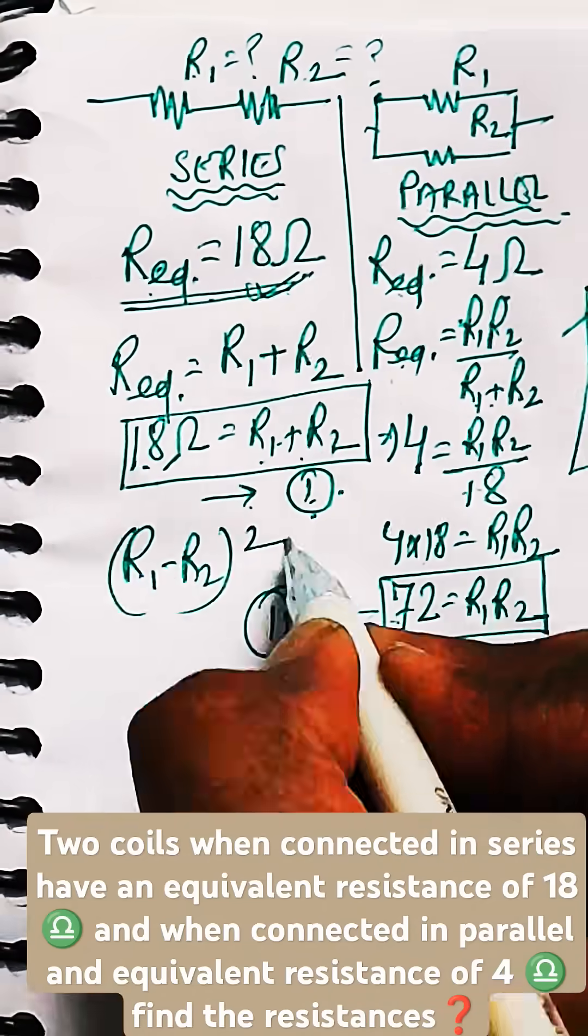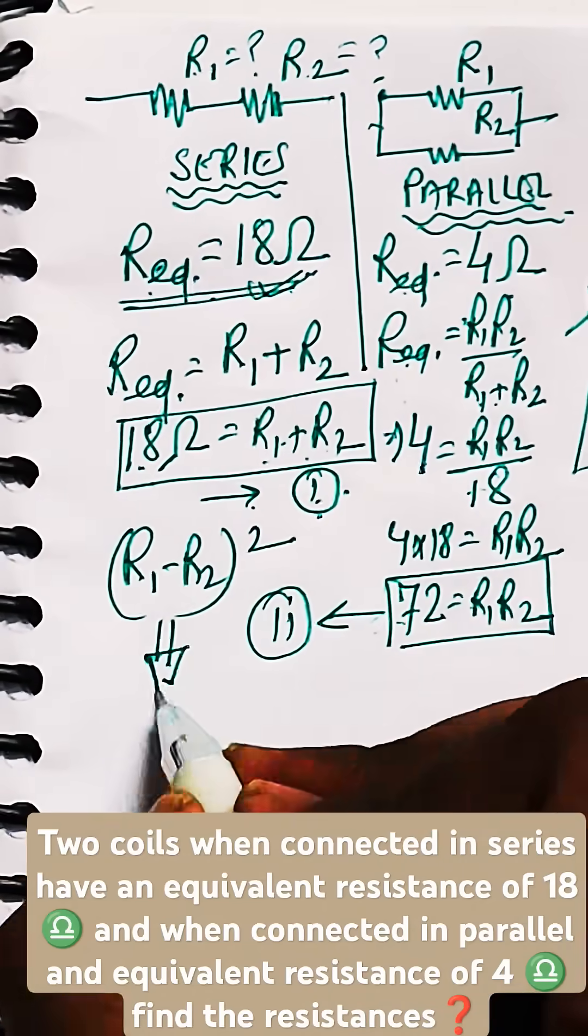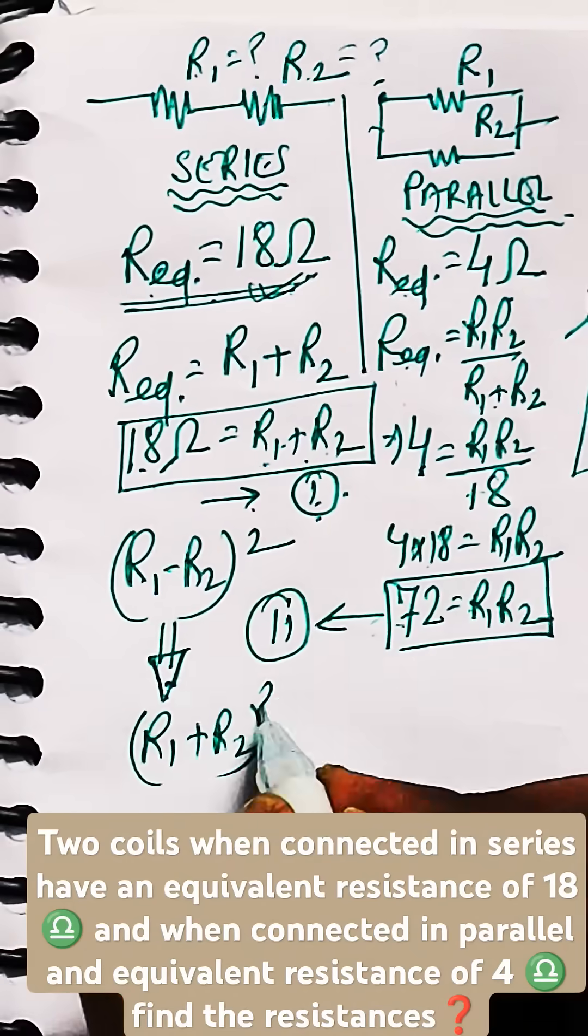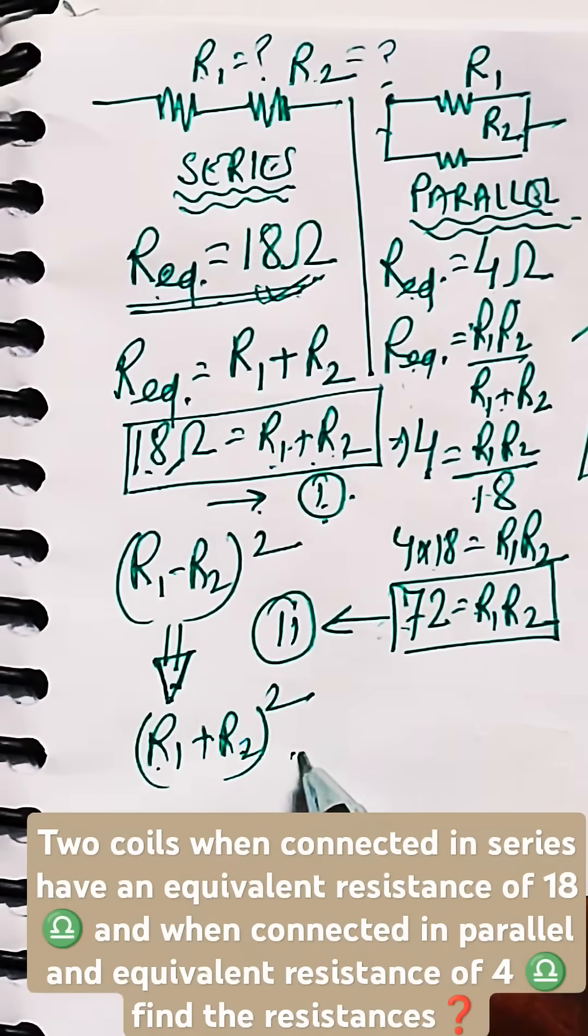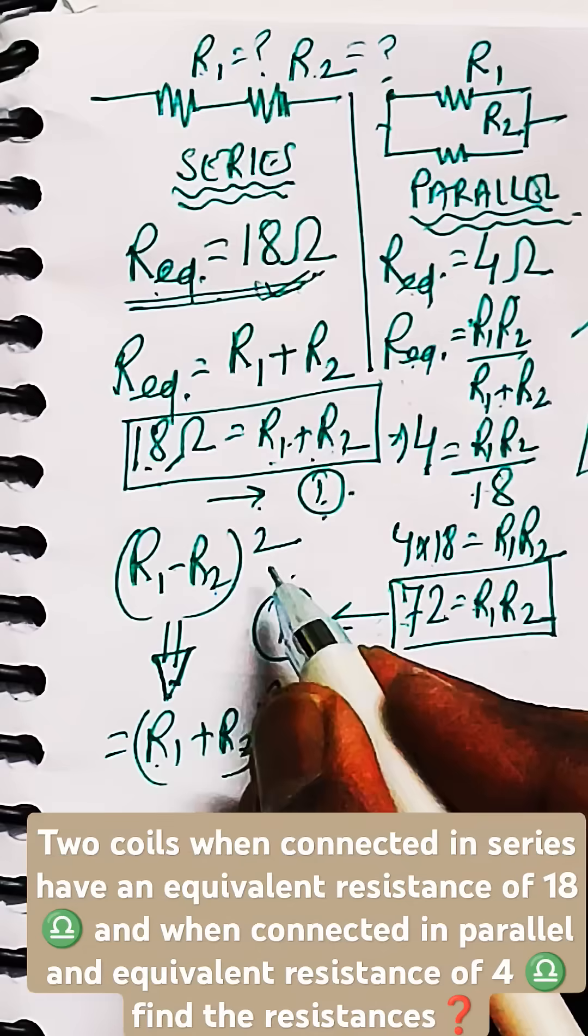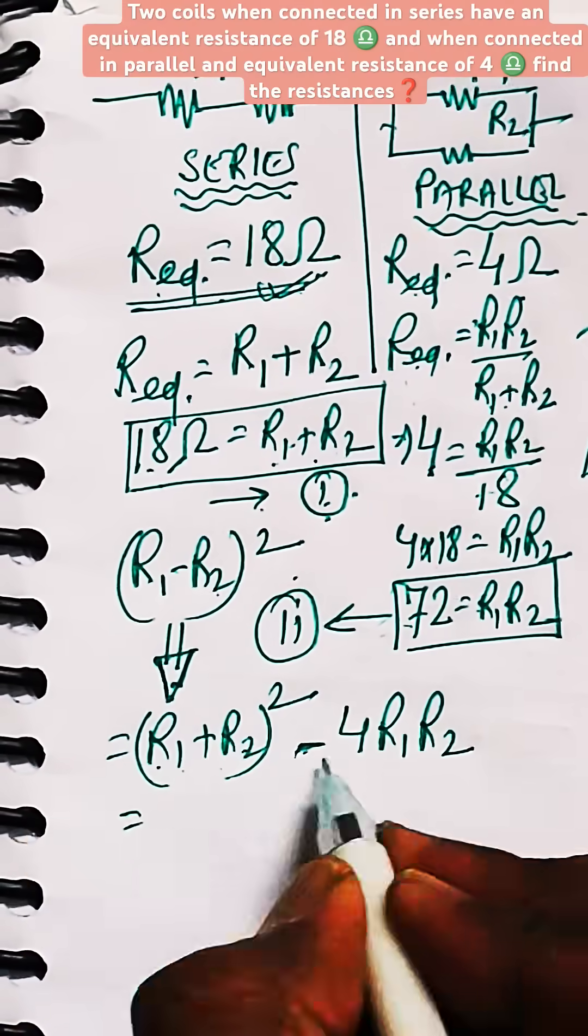Now we will be using one formula: R1 minus R2 whole square is equal to R1 plus R2 whole square minus 4 R1 R2. How is this happening?